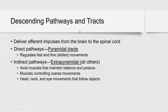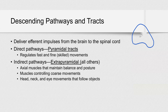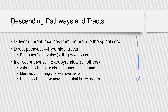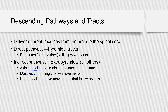Now moving down — information from your brain to your spinal cord and then to your muscles — those are the descending pathways. Everything going up from the periphery to your brain is sensory information; information going from brain to your periphery is motor information — the descending pathway and tracts. We have two direct pathways: pyramidal and indirect extrapyramidal. Pyramidal regulates fast and fine movements, while indirect or extrapyramidal regulates your axial muscles, muscles controlling coarse movement, head, neck, eye movements that follow objects, and it's important for your balance and posture.